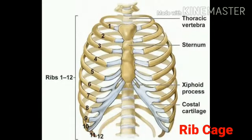The next part is the ribcage. The ribcage is made up of 24 bones arranged in 12 pairs. Its main function is to protect our internal organs like the heart, lungs, and spleen.